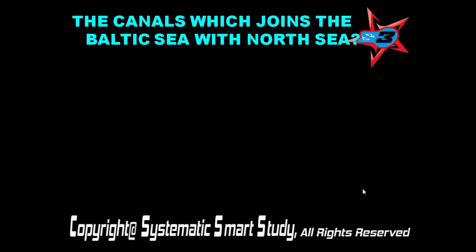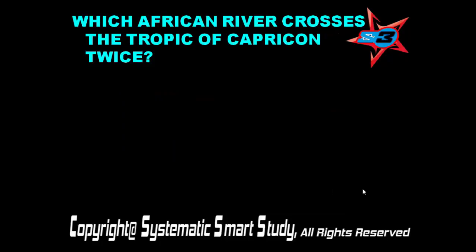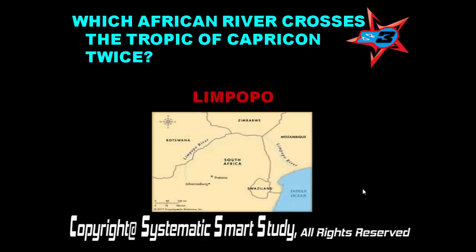The Nile. The canal which joins the Baltic Sea with the North Sea is the Kiel Canal. Which African river crosses the Tropic of Capricorn twice? The Limpopo.